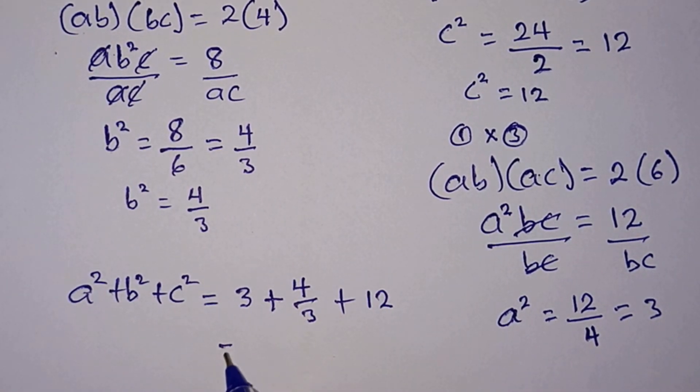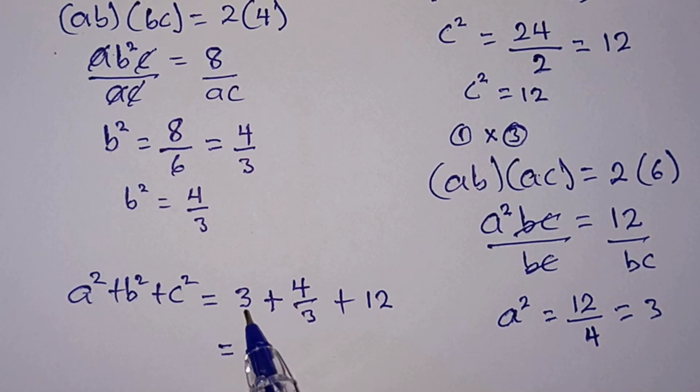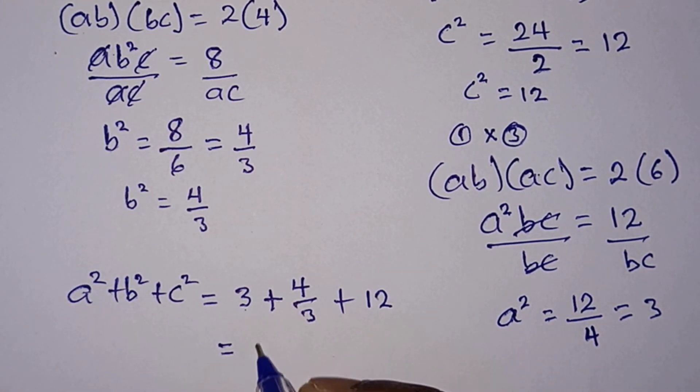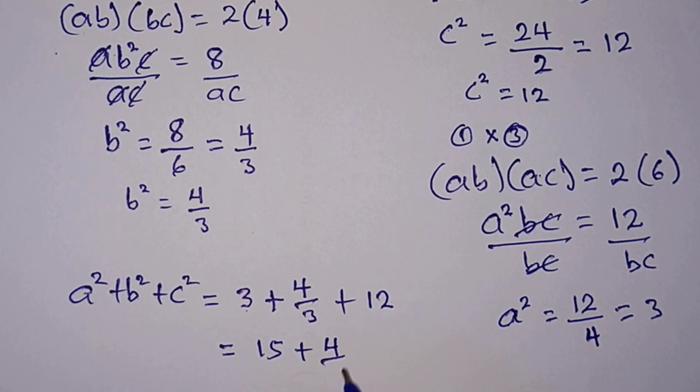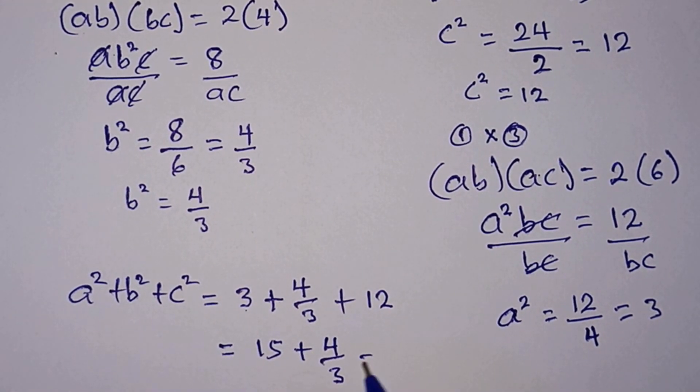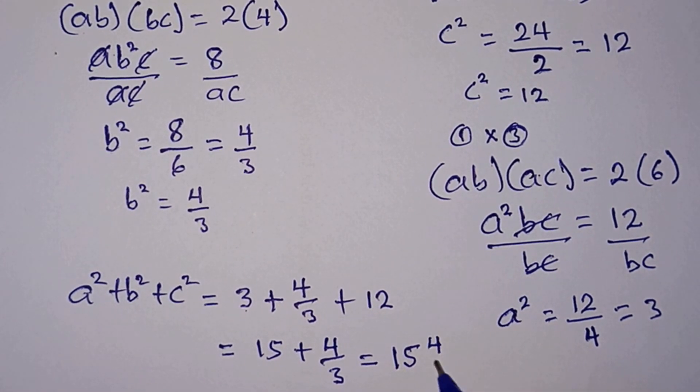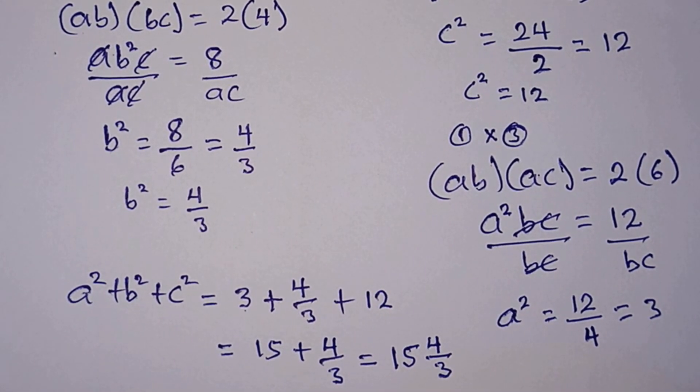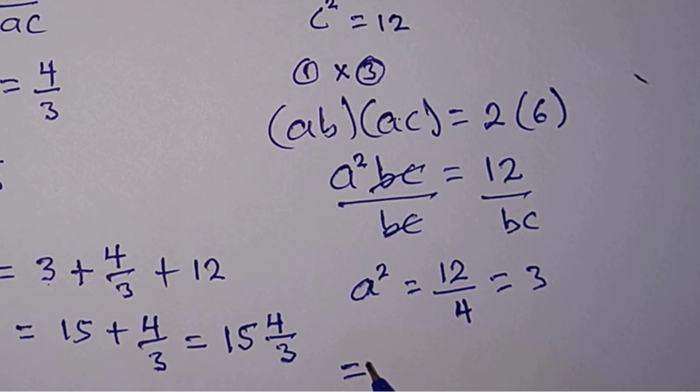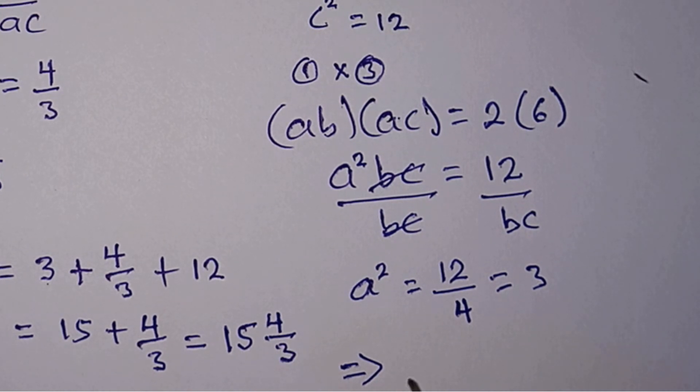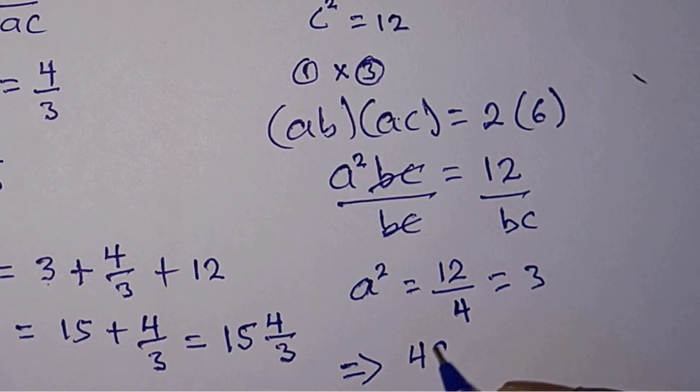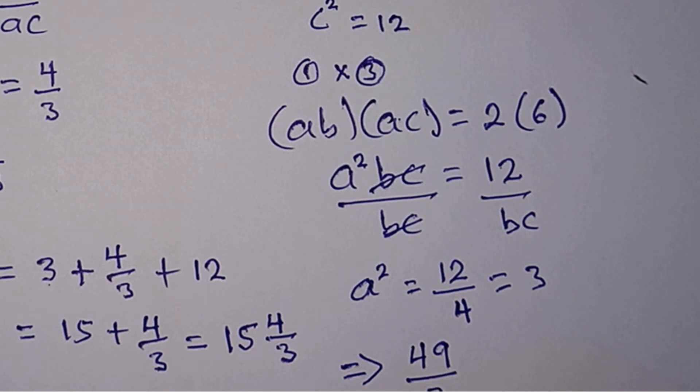Now let's solve this. We have 3 + 12 which is 15. So we have 15 + 4/3. This is the same as 15 and 4/3. Let's change it to improper fraction. So we have 3 times 15 which is 45 plus 4, that is 49. So we have 49/3.